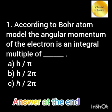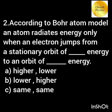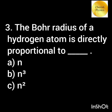According to the Bohr atom model, the angular momentum of the electron is an integral multiple of h/2π. An atom radiates energy only when an electron jumps from a stationary orbit of higher energy to an orbit of lower energy. The Bohr radius of the hydrogen atom is directly proportional to n².